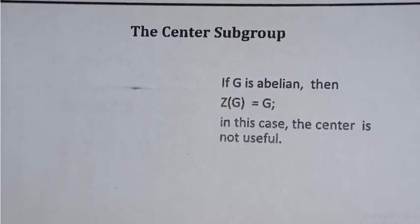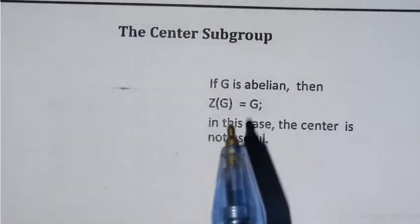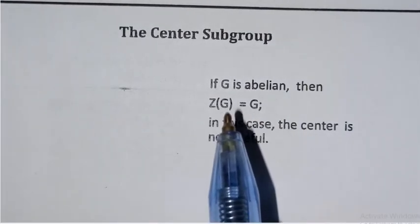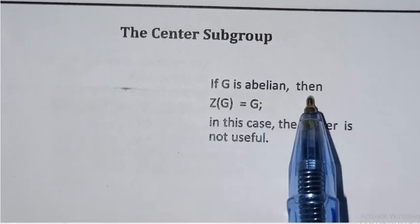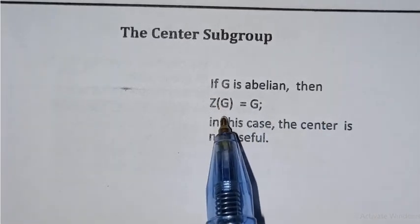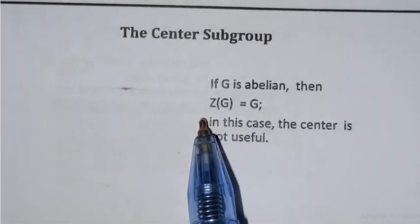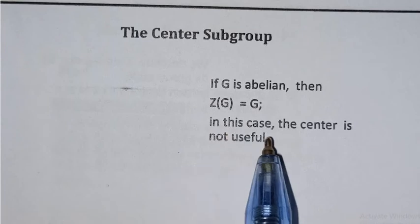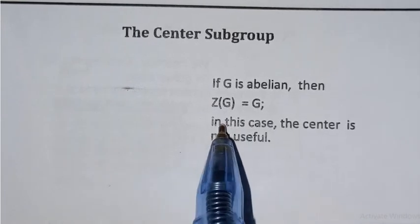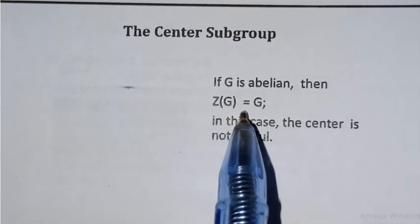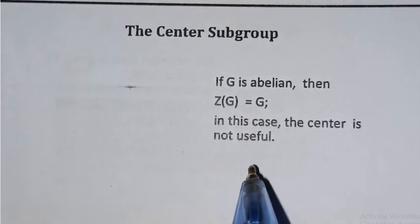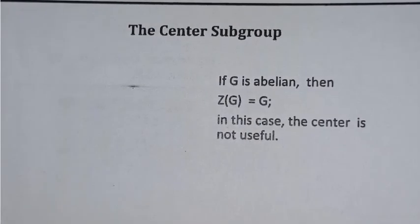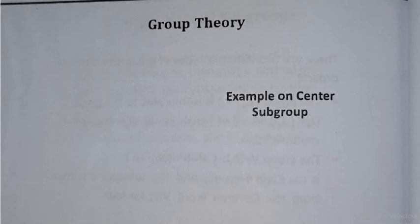If G is abelian, then Z(G) is equal to G itself, since every element commutes with every other element. In that case, the center equals the whole group and is not a useful proper subgroup.